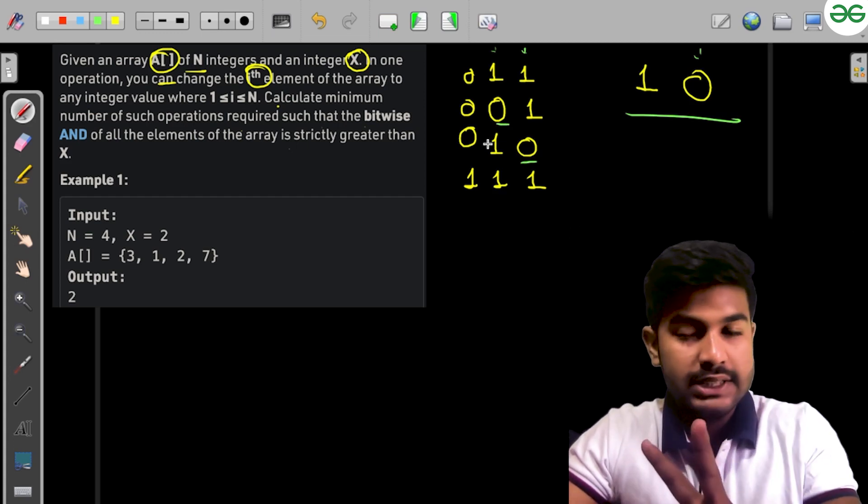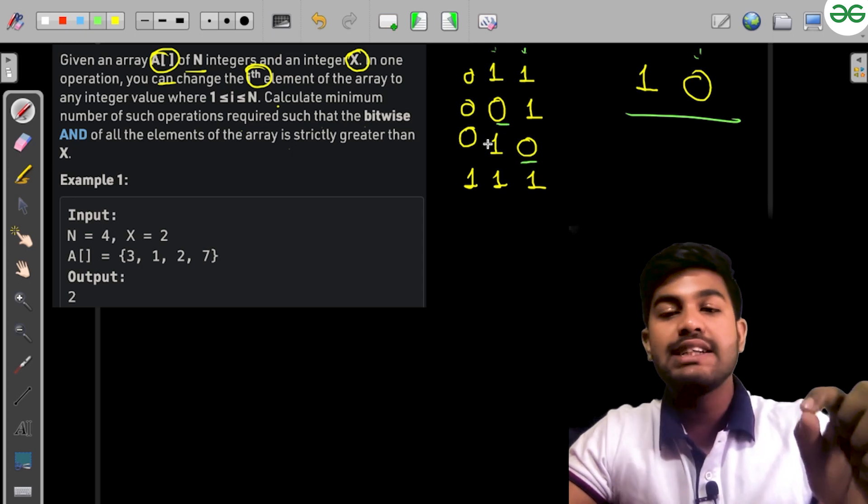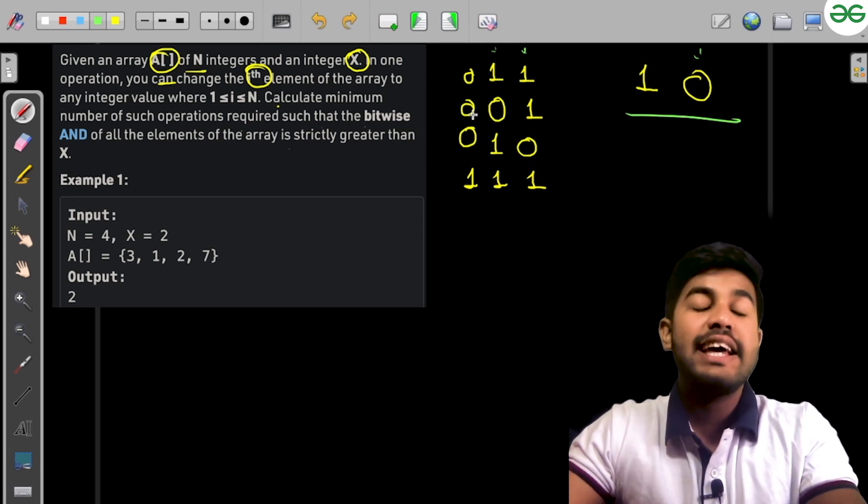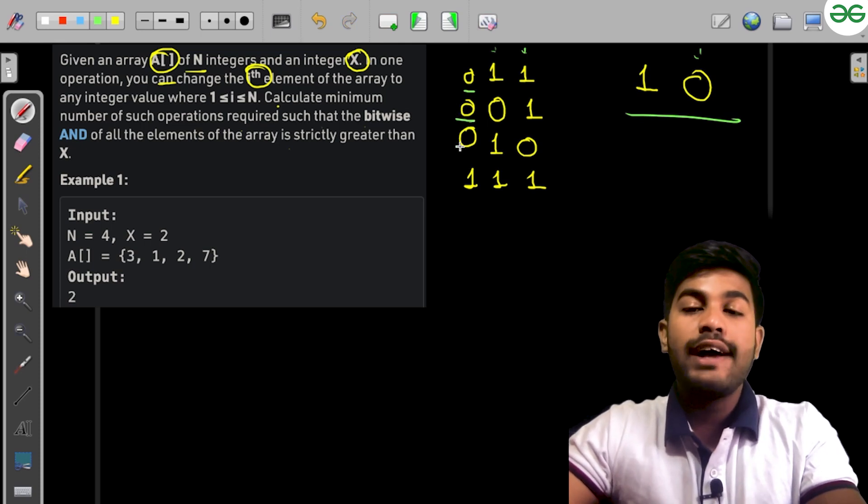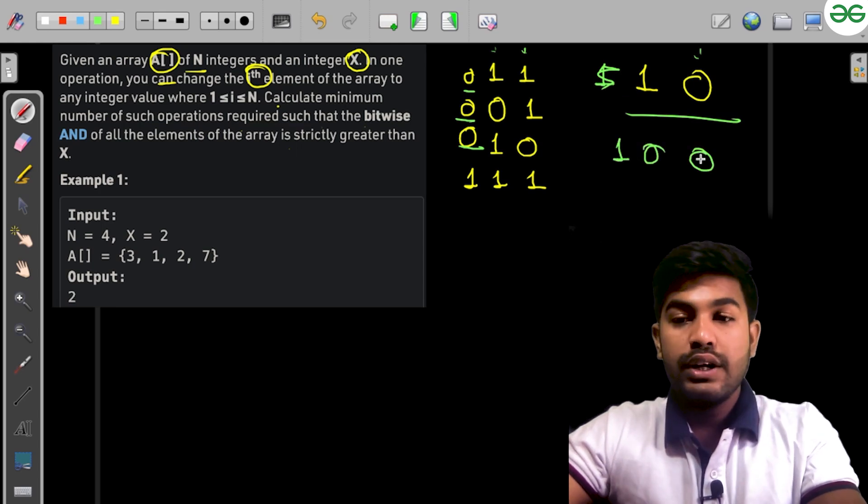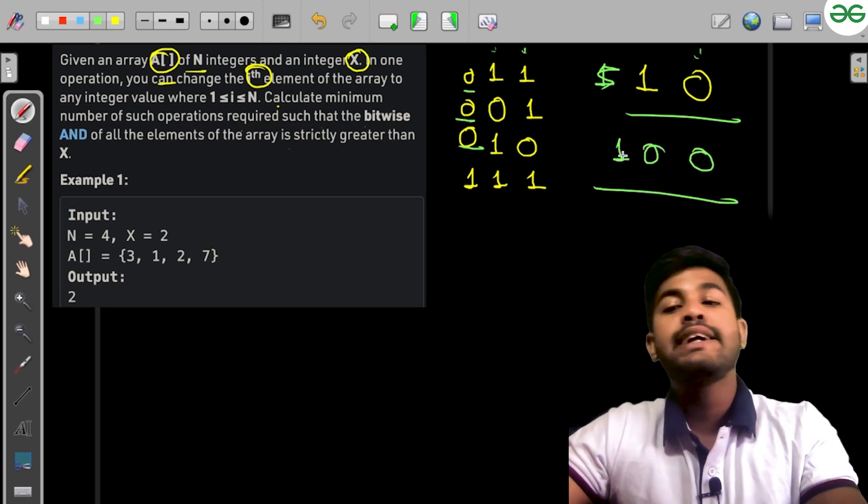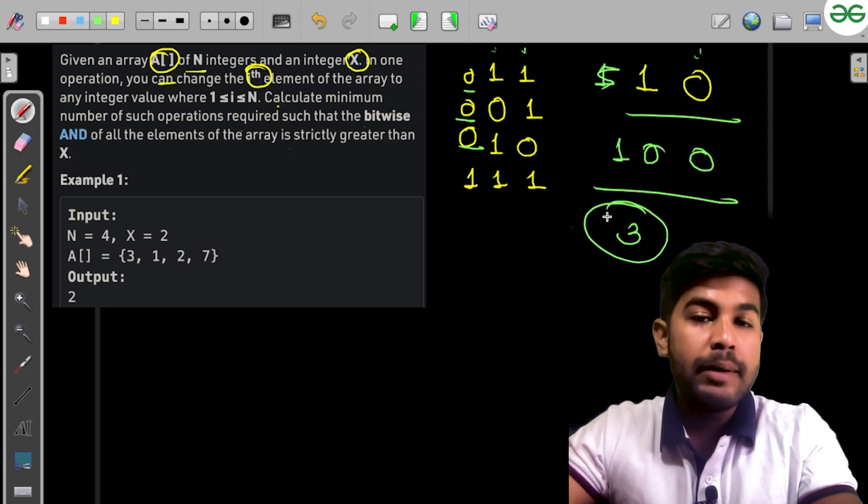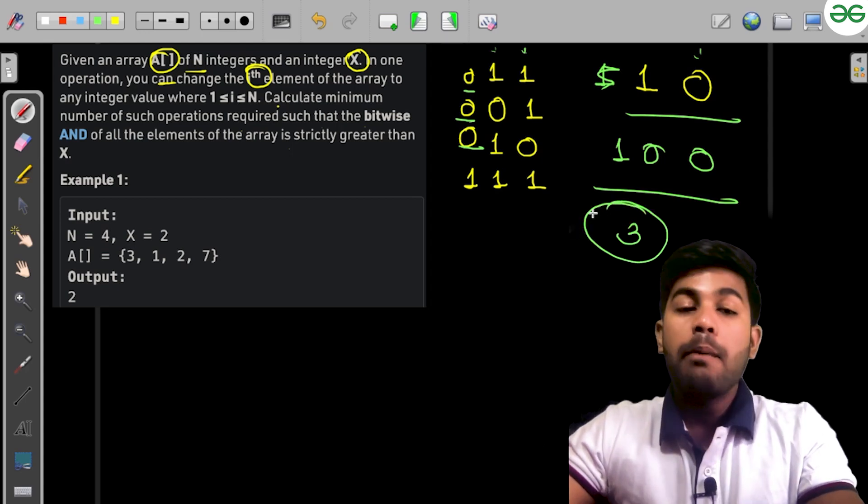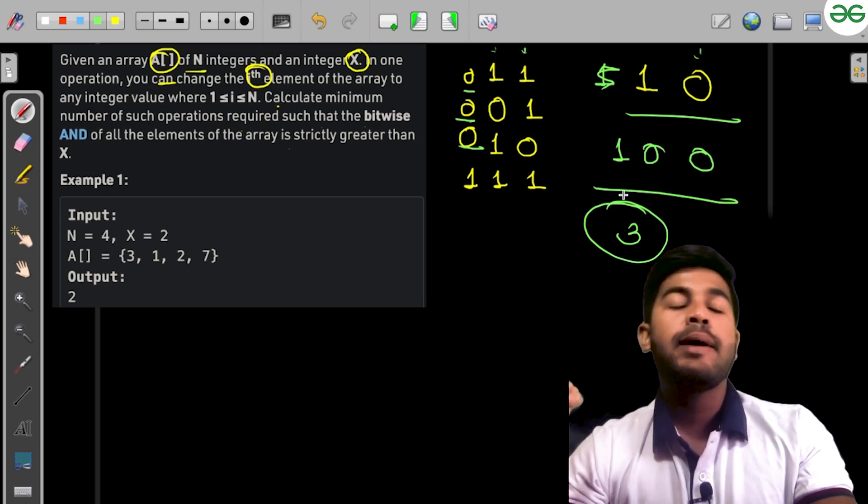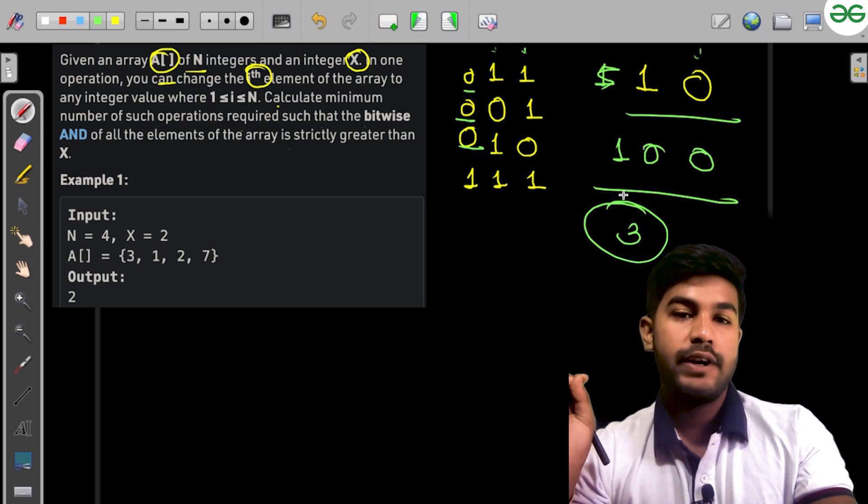Another solution could be setting values to get 4 (100 in binary), which equals zero one two—4 is greater than 2. So 3 operations could also be a candidate for the answer, but it's not the answer because among all probable candidates we want the minimum.